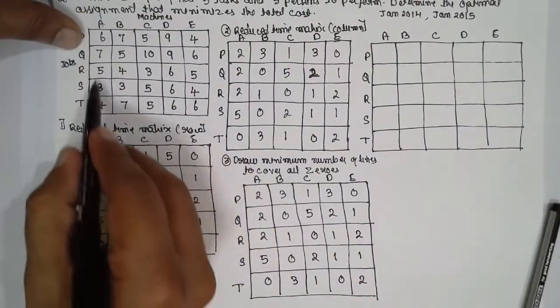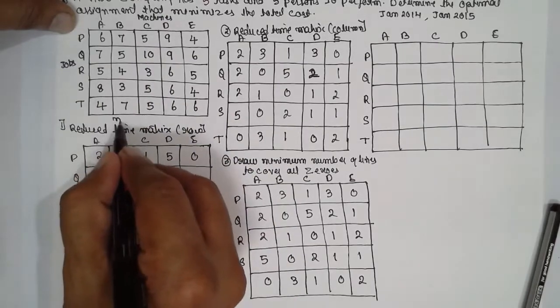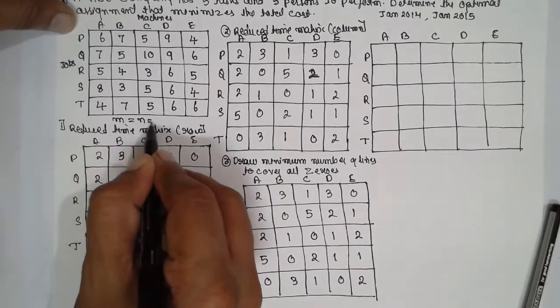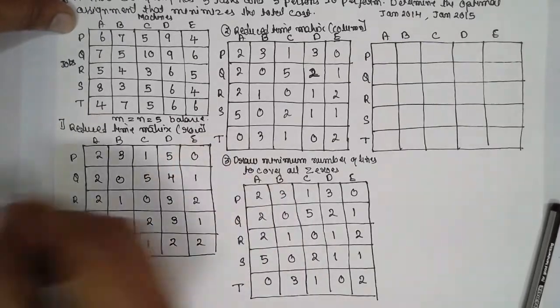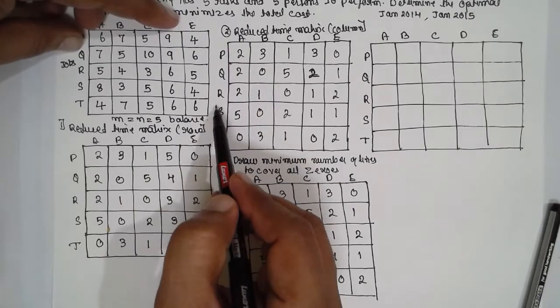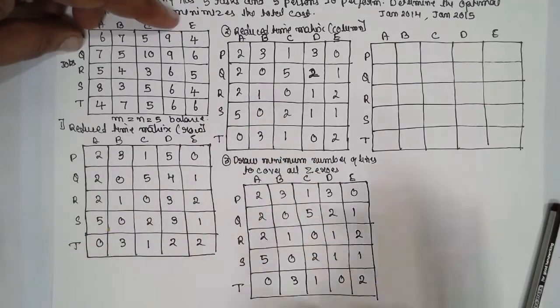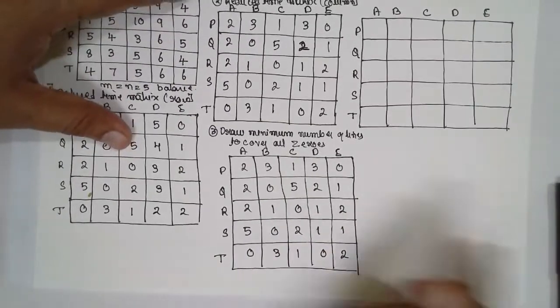Just I have forgotten here. First you have to check the balance. 5: 1, 2, 3, 4, 5. M is equal to 5 and N is equal to 5. It is a balanced problem. If it is unbalanced, we have to introduce dummy in the row or column.